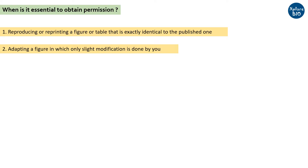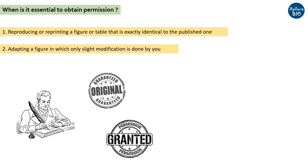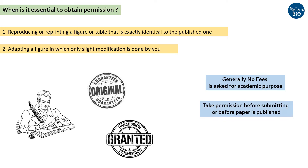It is the responsibility of the lead author or the corresponding author of the research article to verify if all the content including the figures and tables are original. If not, he or she has to make sure and obtain any permission from the original copyright holder. In most cases, researchers or students are not asked to pay any charges or fee for obtaining these permissions, and therefore it is always advisable to take permissions whenever required. This has to be done before submitting your manuscript, or once the manuscript is accepted before publishing.